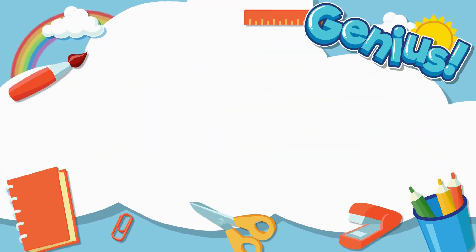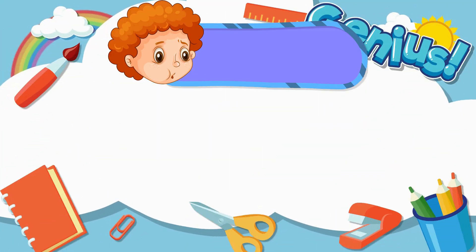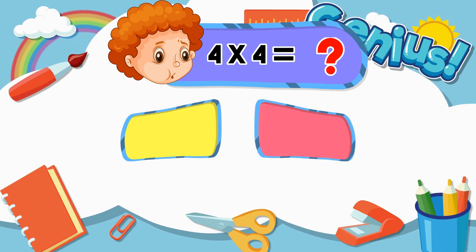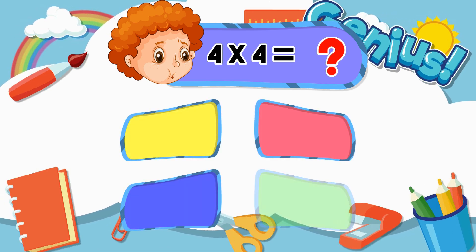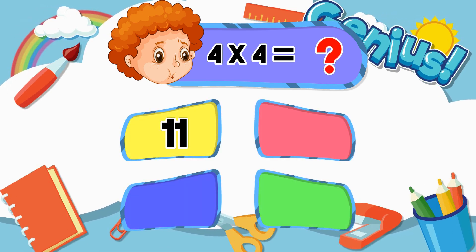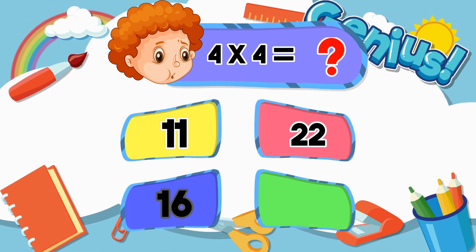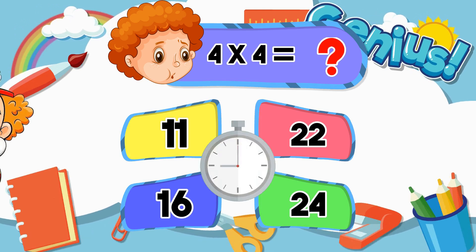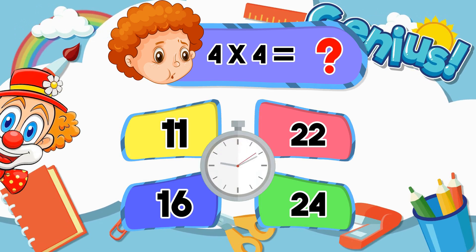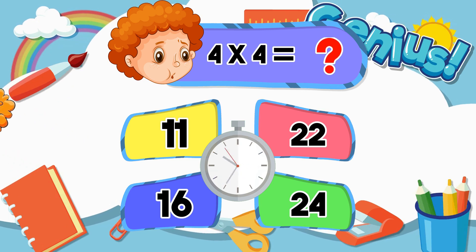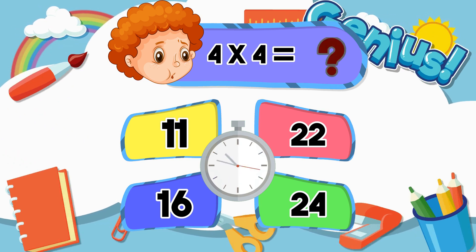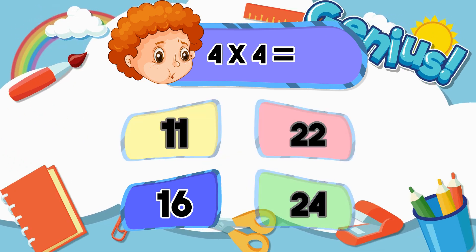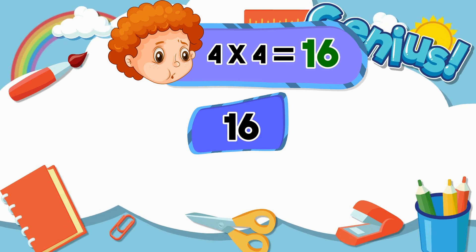What is 4 times 4? 11, 22, 16, 24. The correct answer is 16.